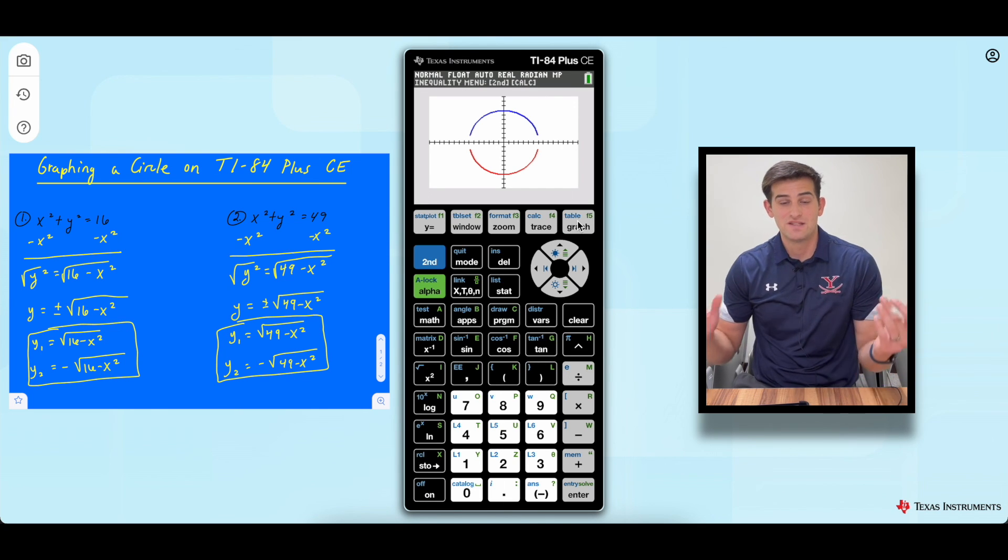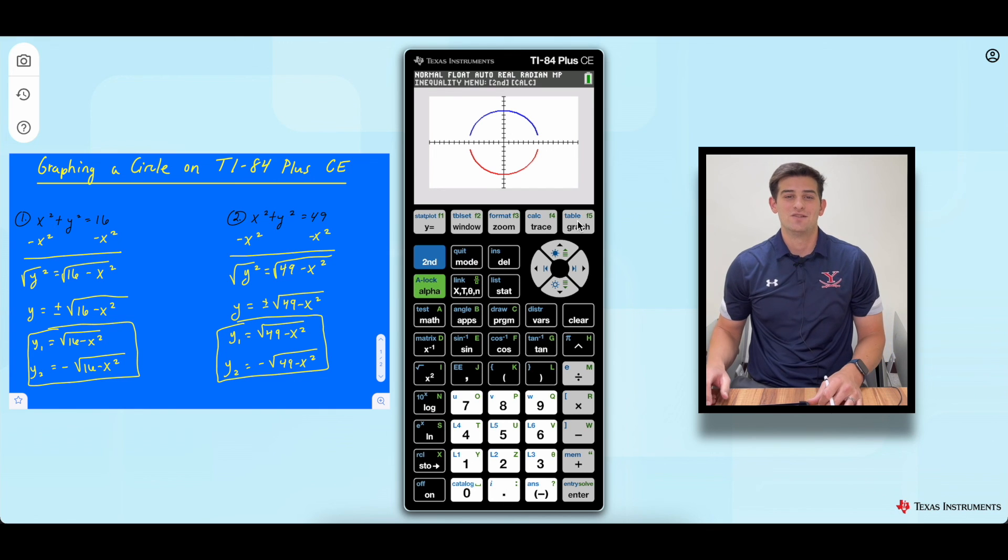Now we hit graph and voila, there's our circle. Okay. So that's how you can graph a circle on the TI-84 plus CE graphing calculator.